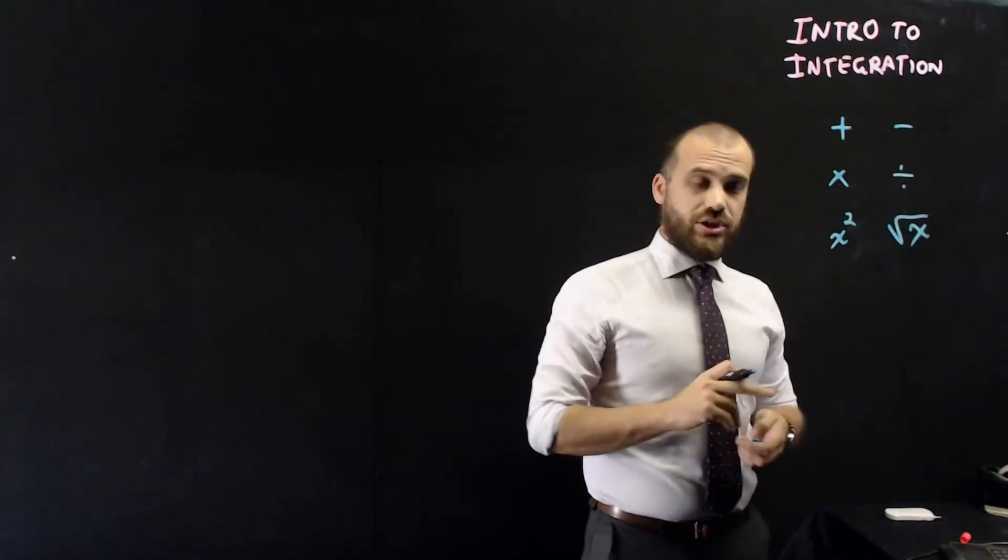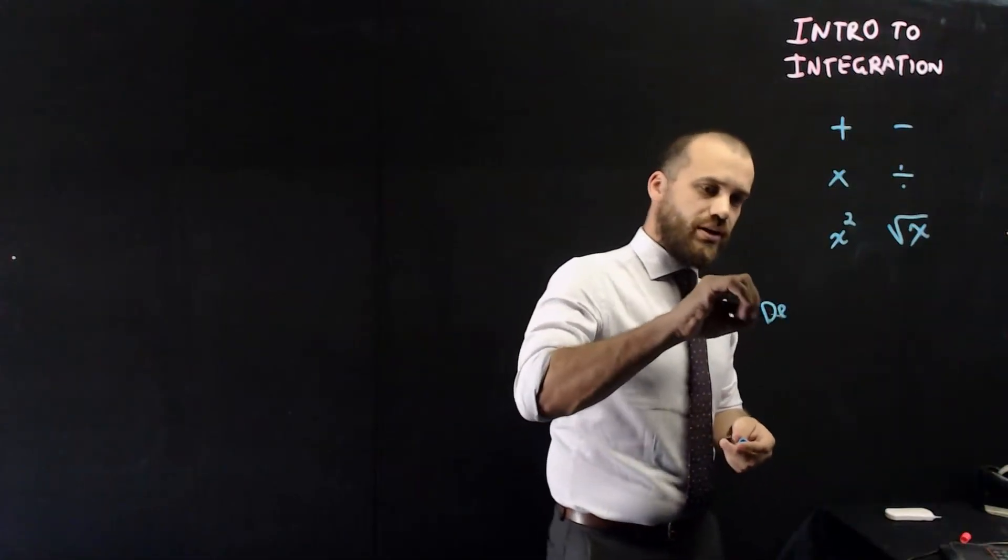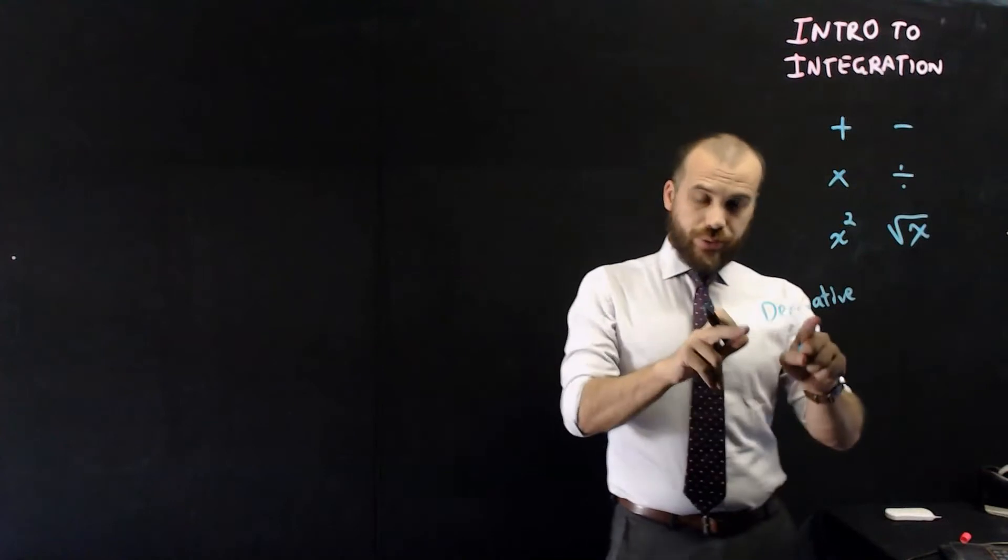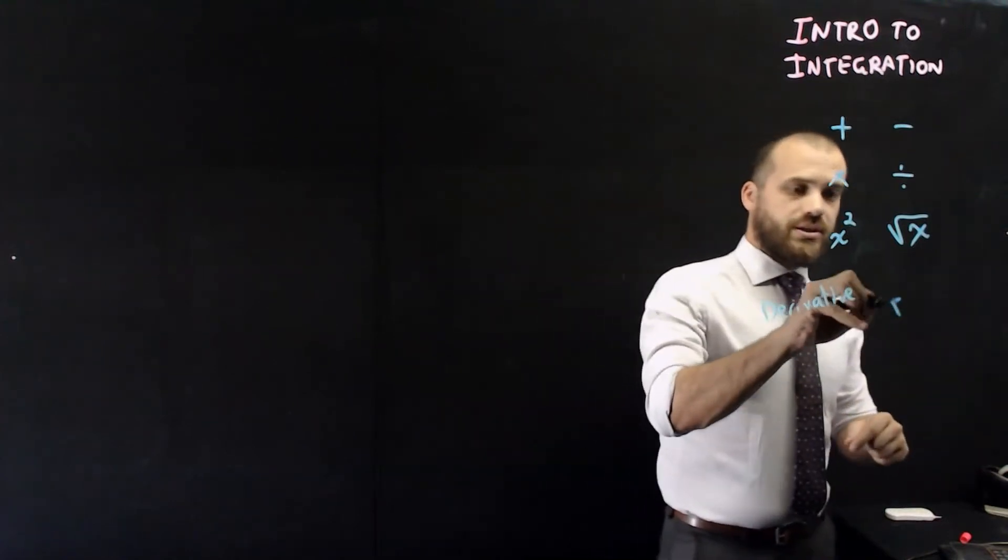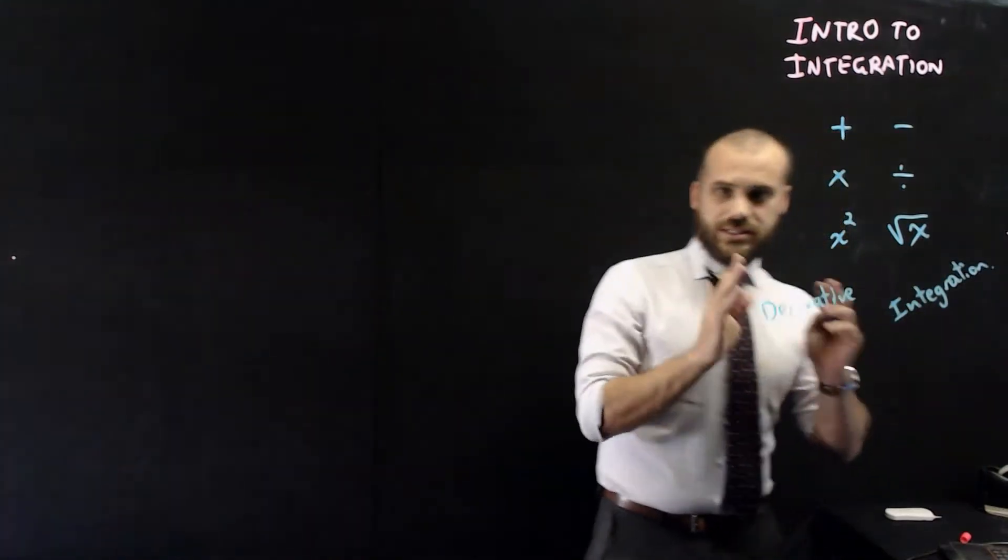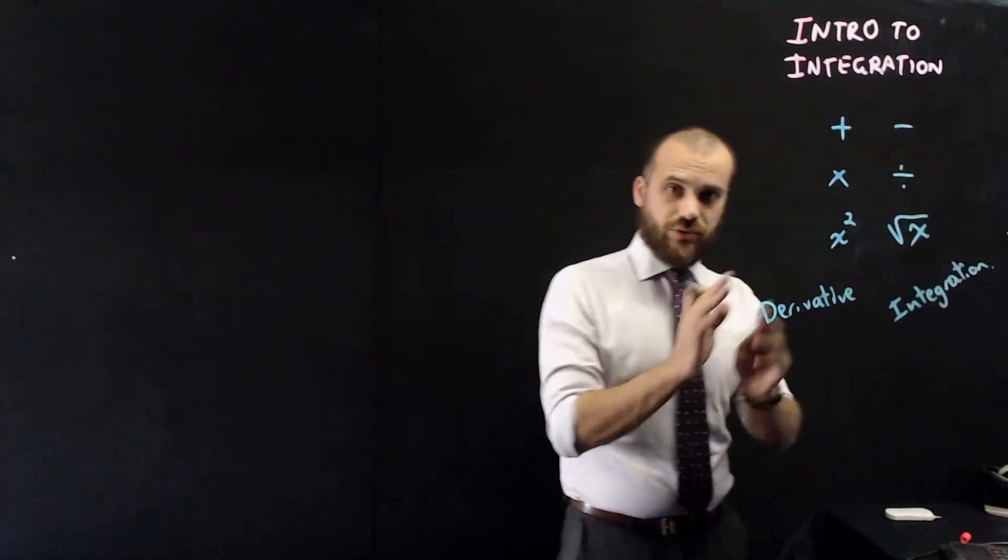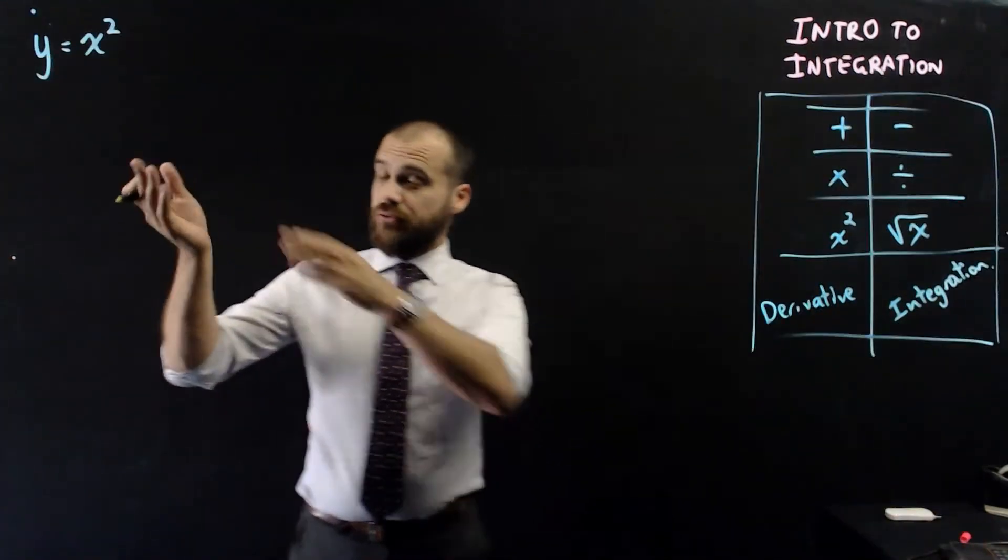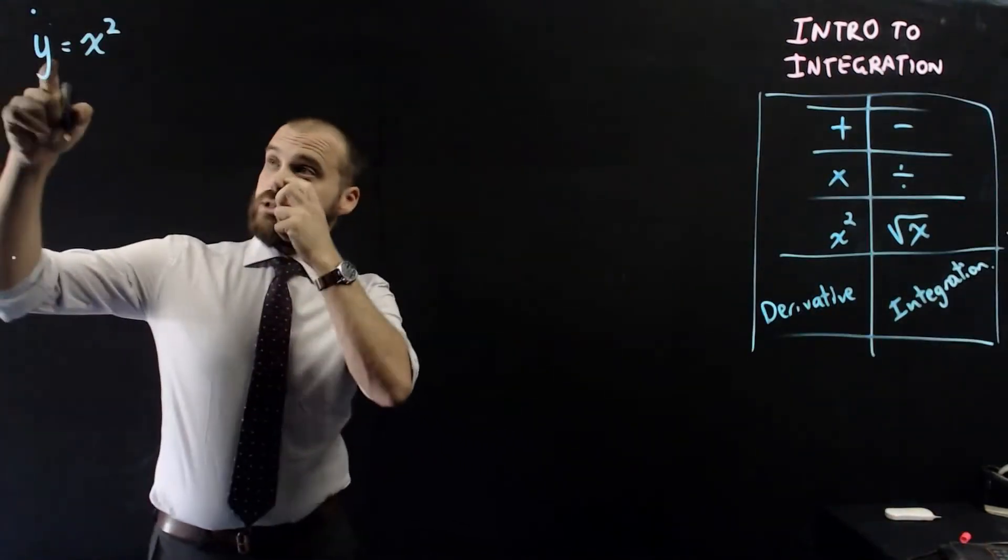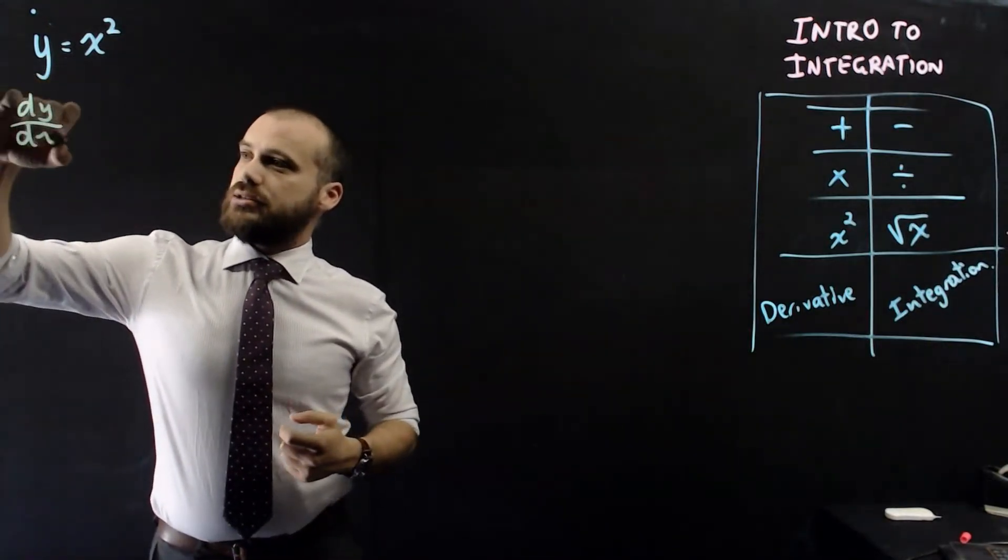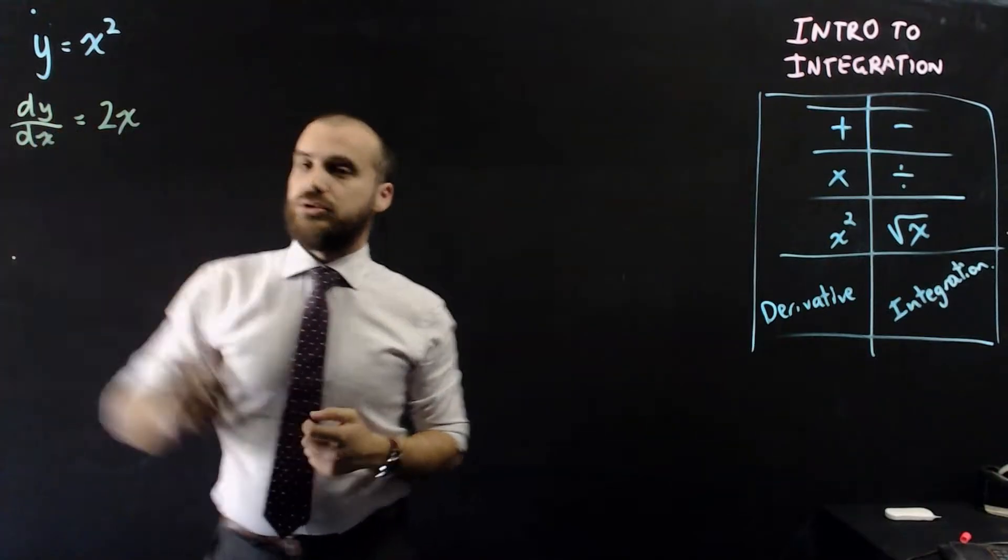So that's where integration comes in. Because you know how to find the derivative of something. The opposite of derivative is integration. That's it. So we're going to do derivatives, but backwards. So derivatives, if someone asked you to find the derivative of this, you'd say, well, y equals x squared. So dy dx is equal to 2x.